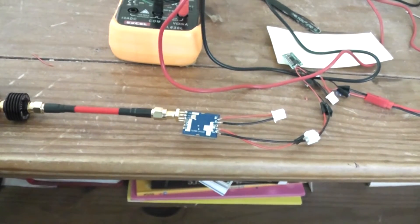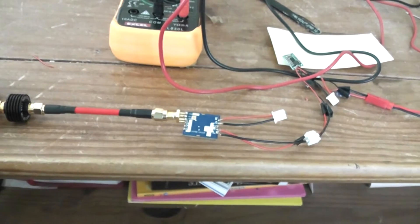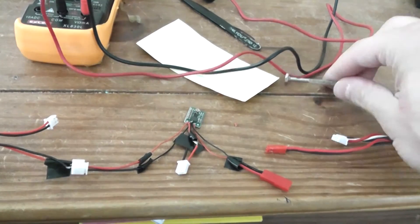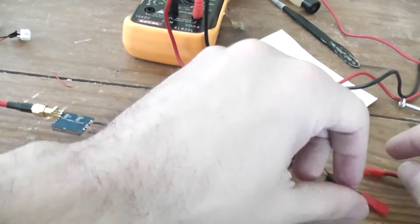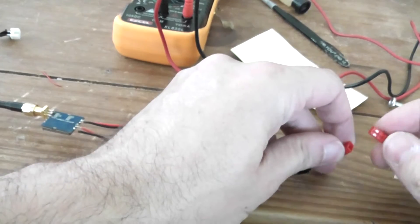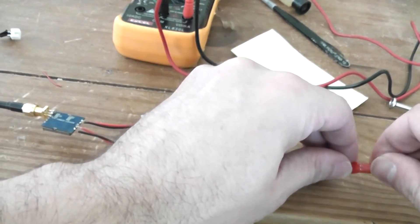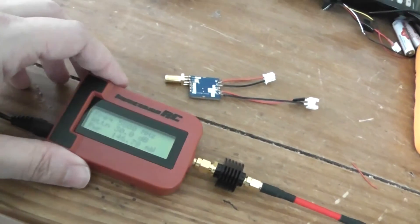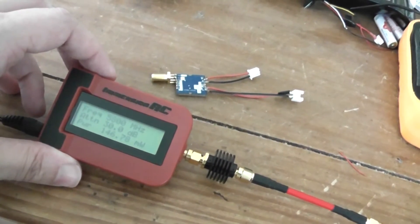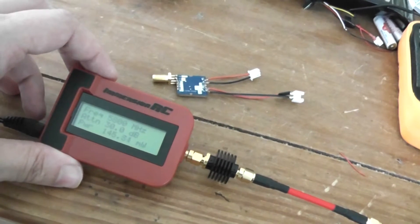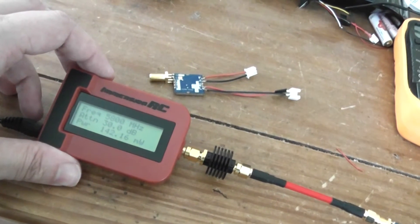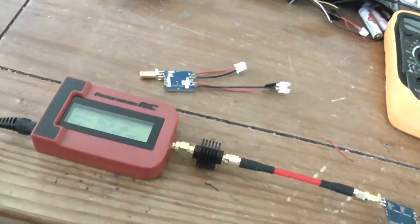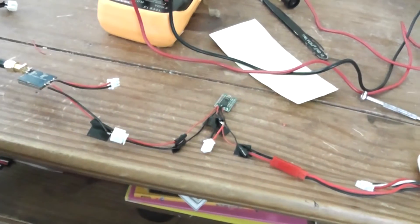Now I will check at 4V. I tune the Pololu to exactly 4V. I will plug again the TX5823. I will connect the LiPo, and now I display 146 milliwatts. So it's better at 4V. Now I will do the same with the other one.